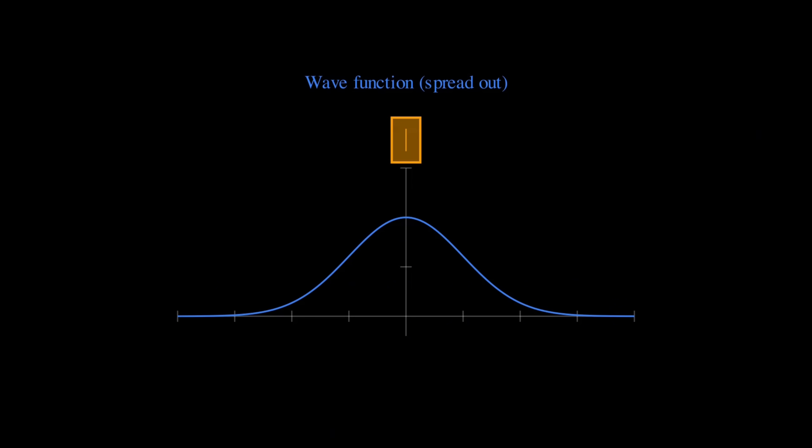When you actually measure a particle's position, you don't find it spread out like the wave function suggests. You find it at one specific location. The smooth wave function suddenly collapses to a spike at the measured position. And which position you get, that's genuinely random, governed only by the probabilities from the wave function. This is the deep mystery at the heart of quantum mechanics.